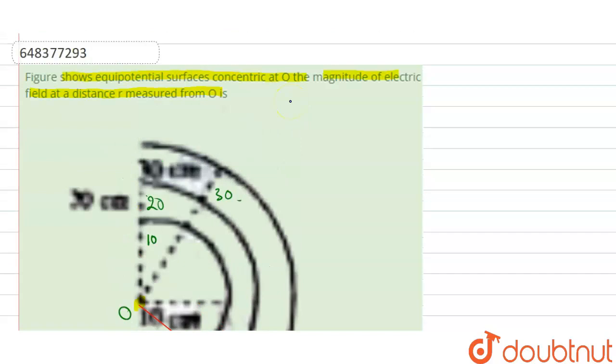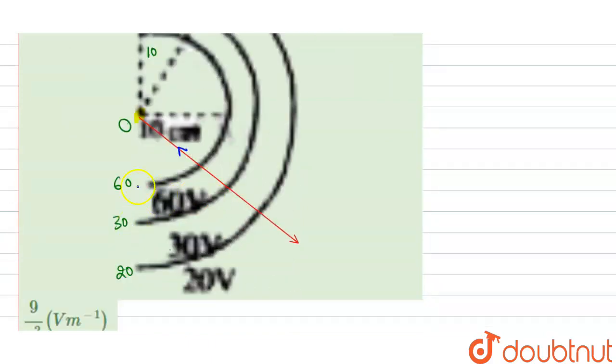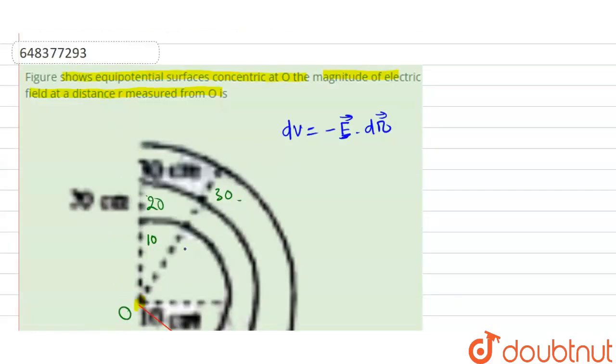That is dV equal to negative E dot dr. This is the relation we can check here. Now if you observe here, our potential is decreasing. Equipotential initially, initial to final value is decreasing. Potential is decreasing, that's why change in potential will always be a negative value.